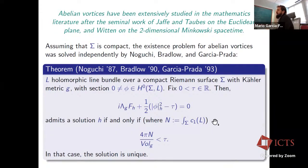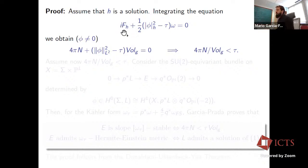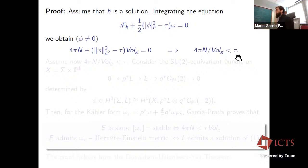I want to recall the proof and emphasize some aspects discovered by Garcia-Prada in his PhD thesis. Assume h is a solution. You can integrate the abelian vortex equation: integrating one term gives the vortex number up to a factor of 2π, and the other term gives a positive L² norm of the section. This equality, cooked out of the abelian vortex equation, automatically implies that tau must be bigger than this combination of vortex number and volume.